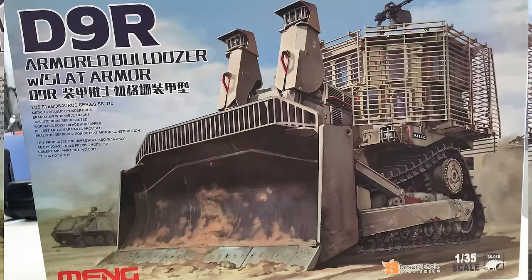Okay, the first kit we're going to look at is the Meng D9R Armored Bulldozer with slat armor. It's done up by the Israelis. Meng did this original kit a couple years back, and now they're redoing it with all the slat armor on it, which makes it really nice.